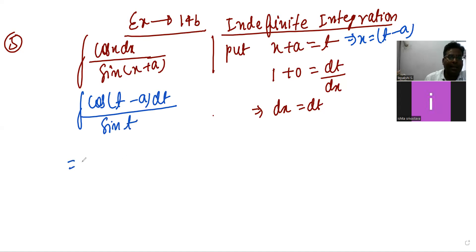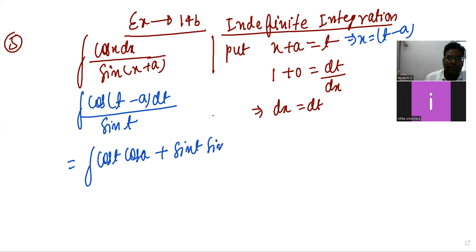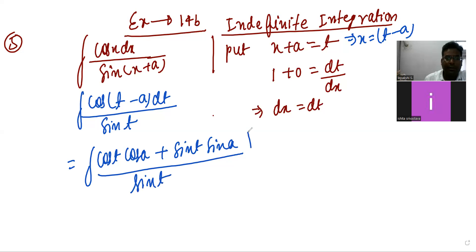Expand the integration using the angle subtraction formula: cos(t minus a) = cos(t)cos(a) + sin(t)sin(a), all divided by sin(t), whole dt.